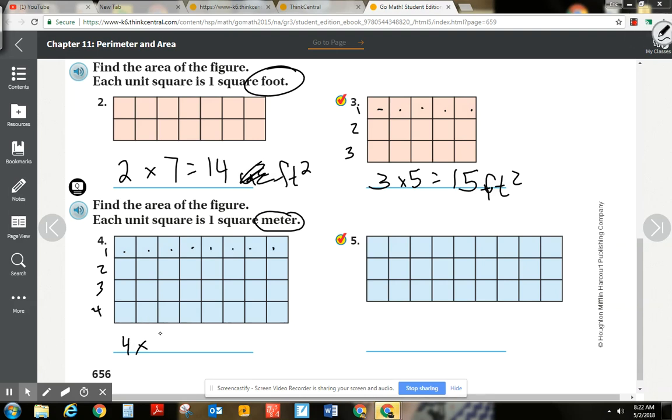And I know that four times eight is 32 meters squared. Very important that you put these labels. If you don't put these labels, you're not going to get the answer correct. But more importantly, people aren't going to know what you're talking about.